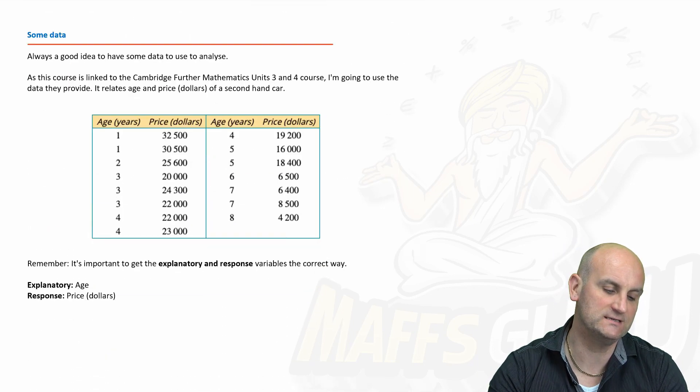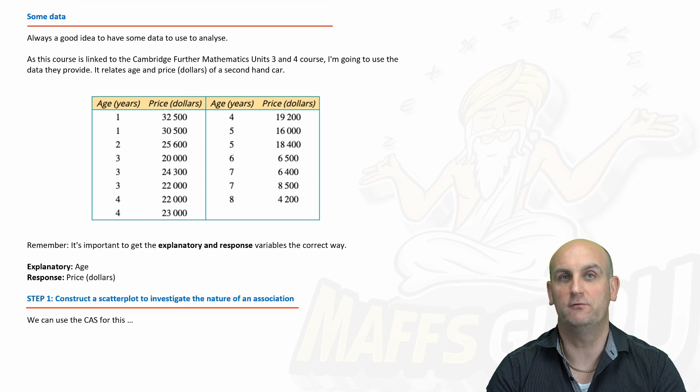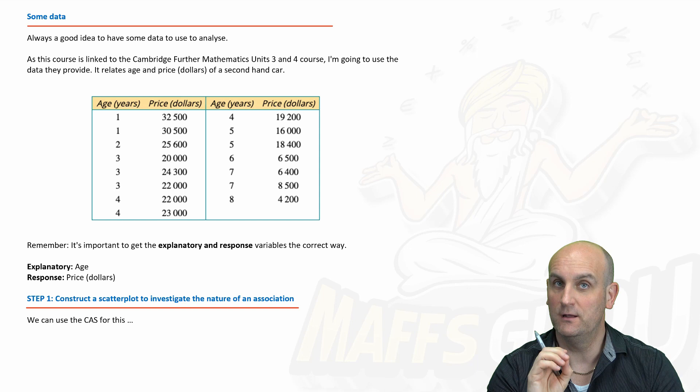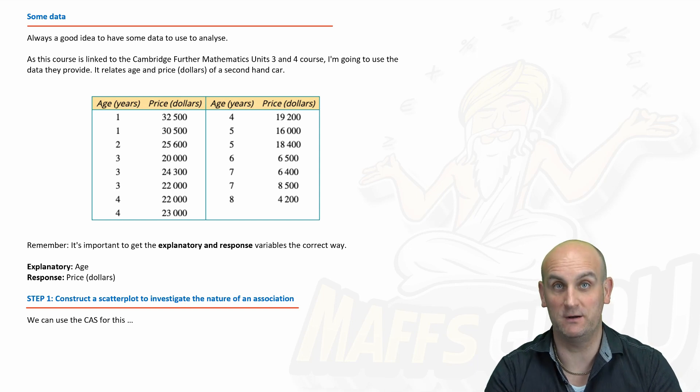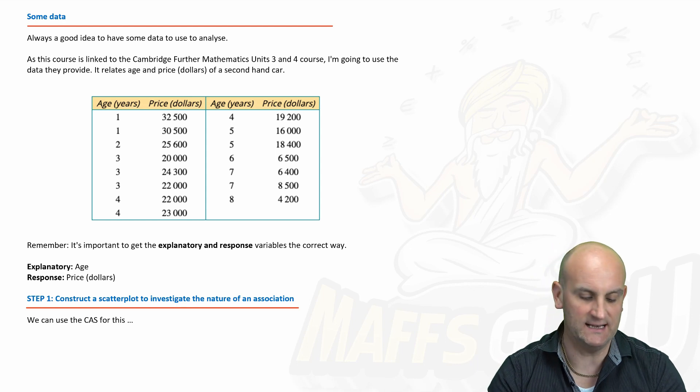Right so first things first as I say here we always need some data to be able to work with to help us find a regression analysis and they have to be numerical data. Both of them must be numerical data so we can draw a scatter plot and from that we do our regression analysis.